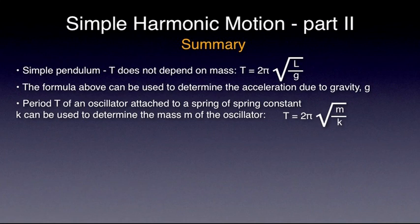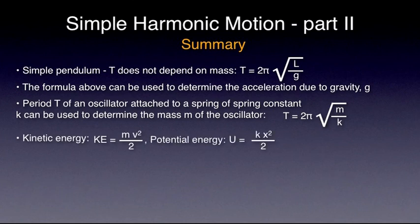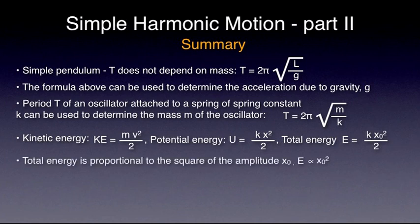As an object undergoes simple harmonic motion, its kinetic energy constantly turns into potential energy and the other way around as the object changes its position. The total energy, however, remains constant. The total energy of a simple harmonic oscillator is proportional to the square of its amplitude.